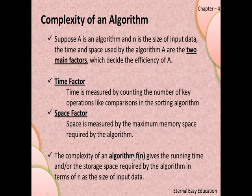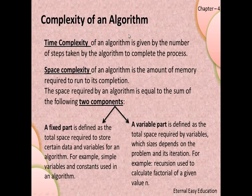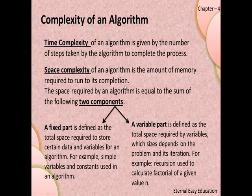If n is the input data, then f(n) is the complexity of the algorithm, giving the running time and storage space required. The complexity has two factors — time and space. Time complexity is given by the number of steps taken by the algorithm to complete the process. Space complexity is the amount of memory required to run the algorithm to its completion.